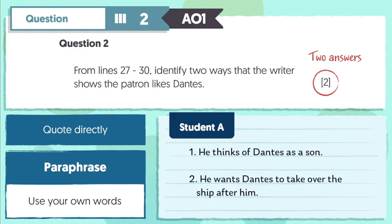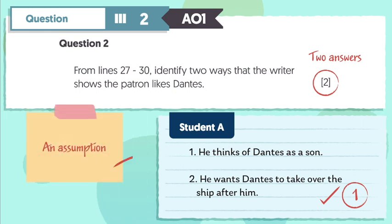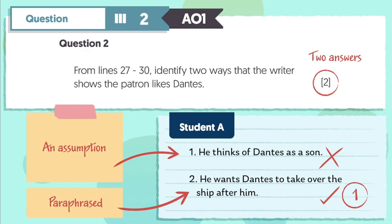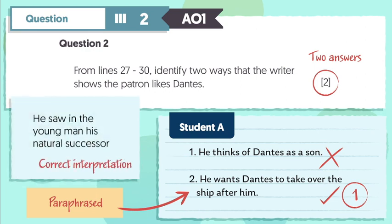Let's look at Student A's response first. For this response, only one of the two possible marks could be awarded. In the first part of the response, the student states that 'he thinks of Dantes as a son' — this is an assumption that's been made, it's not actually supported by the text, so it wouldn't get a mark. On the other hand, the paraphrased line 'he wants Dantes to take over the ship after him' does get a mark, because it's a correct interpretation of the quotation from the text: 'he saw in the young man his natural successor.'